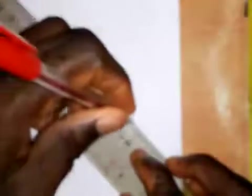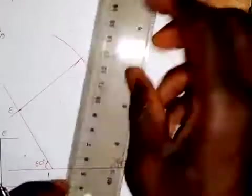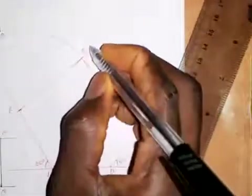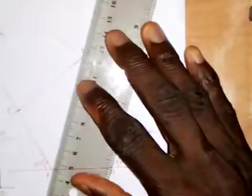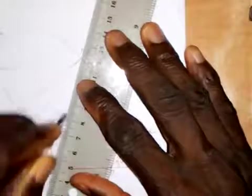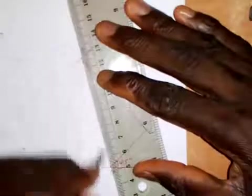I believe you can see the way I constructed this polygon. It's an irregular pentagon — very simple. Next I will join AD and BD together as diagonals of the pentagon.